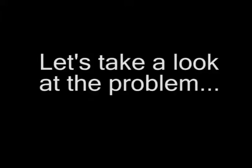Let's take a look at the problem. To use the FOIL method, start with the first term in each group. For this problem, it's 3x and 2x. Then the outer terms, 3x and 7. And the inner terms, negative 5 and 2x. Finally, the last terms, negative 5 and 7.